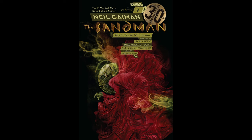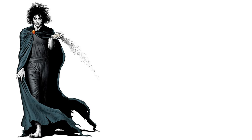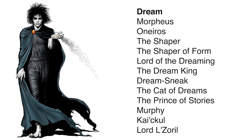Sandman is about an entity named Dream. He is the lord of dreams — the personification of all dreams — and he rules the place where we spend a third of our life sleeping. He generally appears as a pale white guy with dark eyes and shaggy black hair. He has many names: Morpheus is the most used, but also Oniros, the Shaper, the Shaper of Form, the Lord of the Dreaming, the Dream King, the Dream Sneak, the Cat of Dreams, the Prince of Stories, Murphy, Kaikukul, and Lord Zoril.